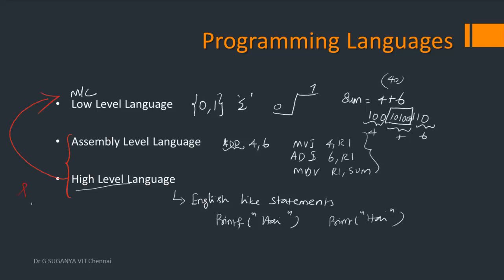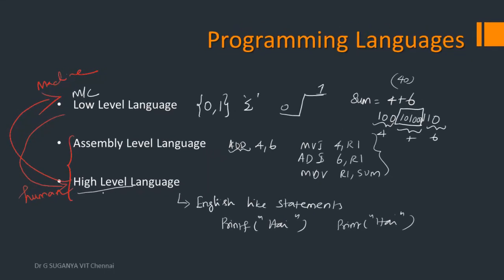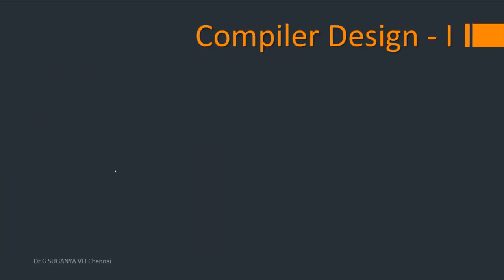So when the instructions have to flow from human to machine, the machine completes its computation and it has to give back the result back to human. So what happens, the translation on the other side will happen. So the output from machine level language to be converted to either assembly level language or high level language according to the preference.